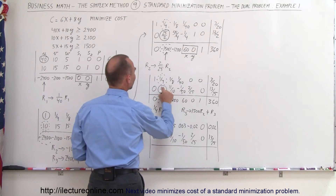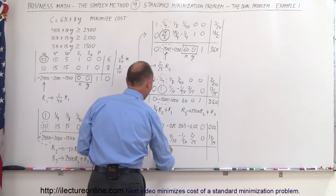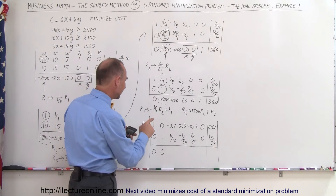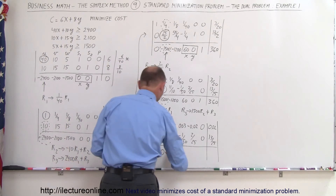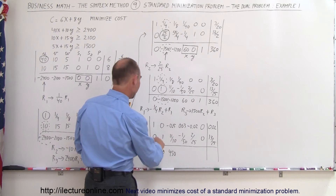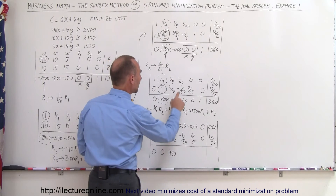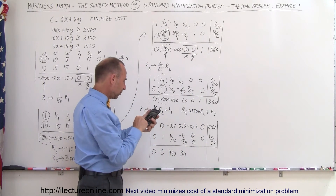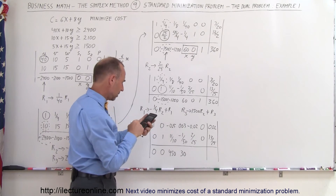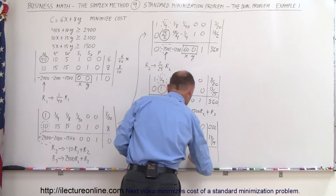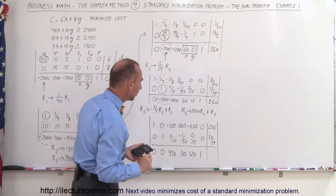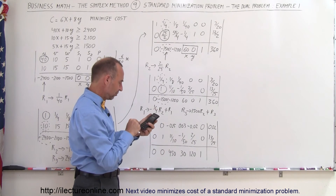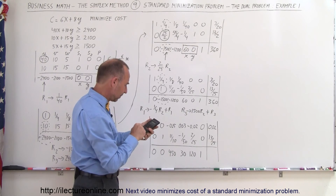For the third row: 1500 times the second row added to the third row. The first entry stays 0, the second becomes 0. 1500 times 11/10 added to minus 1200 gives plus 450. 1500 times minus 1/50 gives minus 30, added to 60, that's 30. 1500 times 2/25 gives 3000/25, which is 120. The 1 stays. And 1500 times 13/25: 1500 divided by 25 times 13 is 780, added to 360, gives 1140.